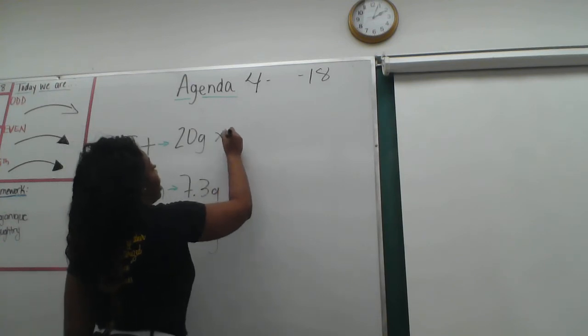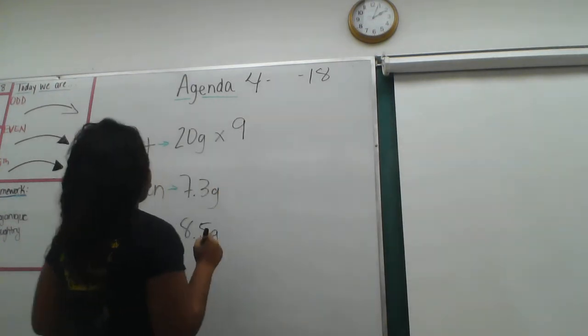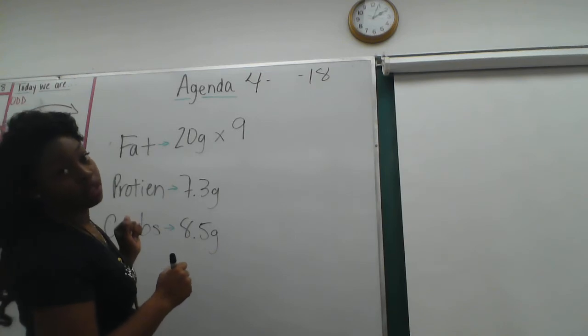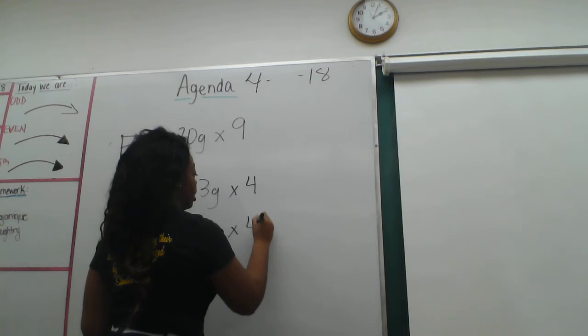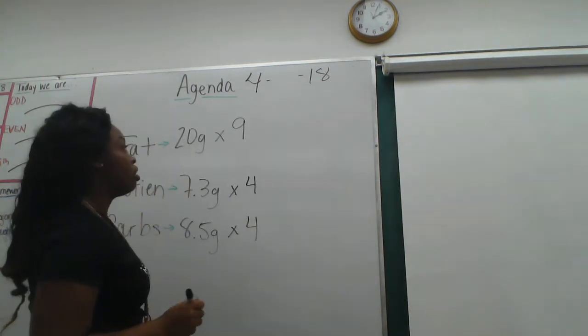For proteins and carbohydrates, like we did on the worksheet, you're going to remember that it's times 4 to get the amount of calories. Once you multiply these out, you're going to add them together.